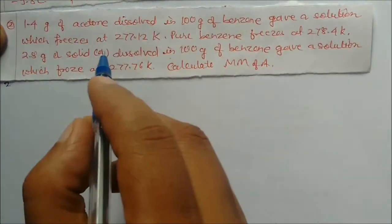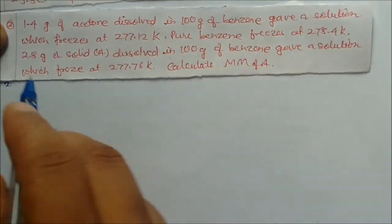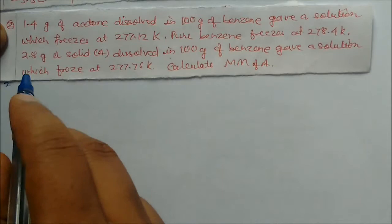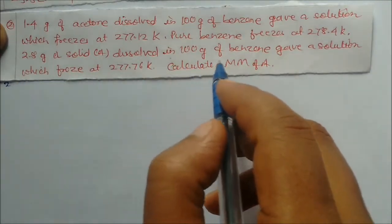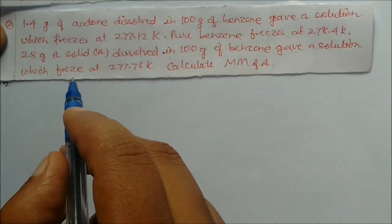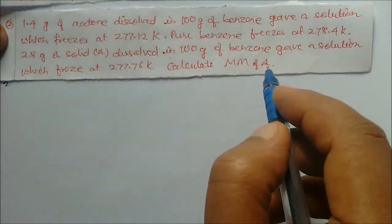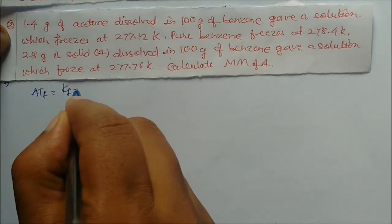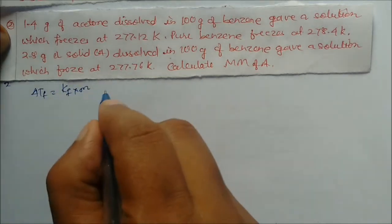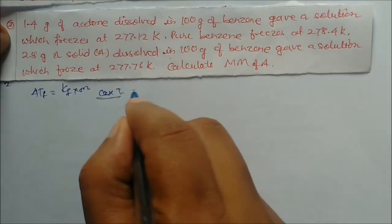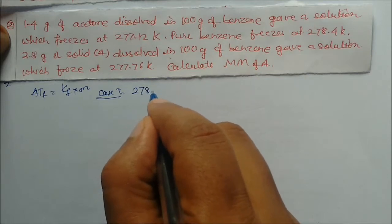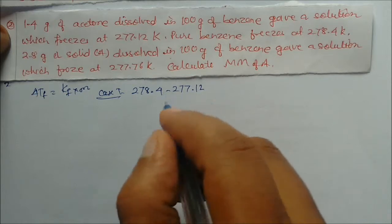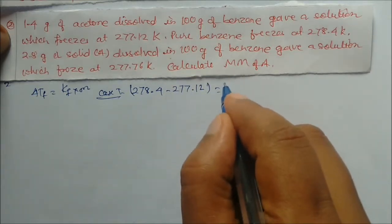Next problem: 1.4 grams of acetone dissolved in 100 grams of benzene gave a solution which freezes at 277.12 K. Pure benzene freezes at 278.4 K. Also, 2.8 grams of solid A dissolved in 100 grams of benzene froze at 277.76 K. Calculate the molecular mass of A. Using delta Tf = Kf × m, we set up Case 1: delta Tf = 278.4 − 277.12.